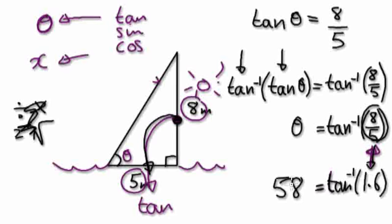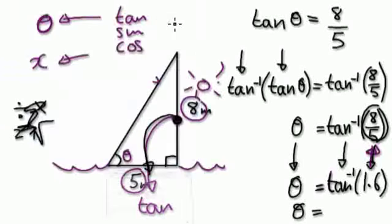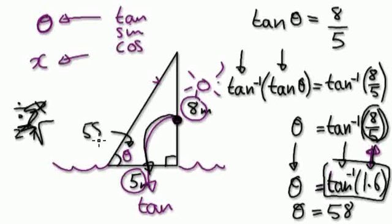So 58. So this, on the left-hand side, it would be theta. This thing would become this. And so theta becomes, what was it, 50, 58. So when you press inverse tan 1.6, it becomes 58. So you know the angle here is 58 degrees.